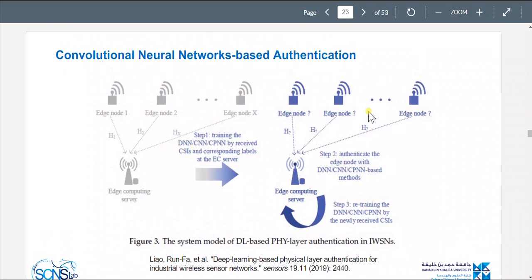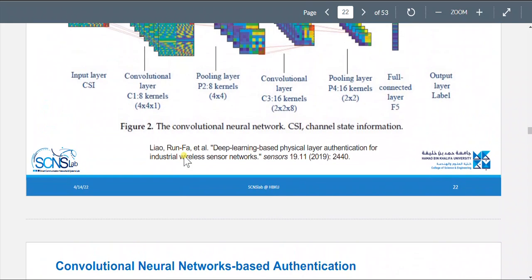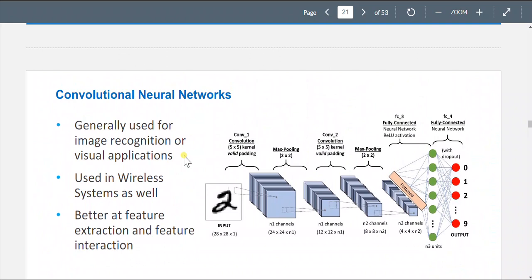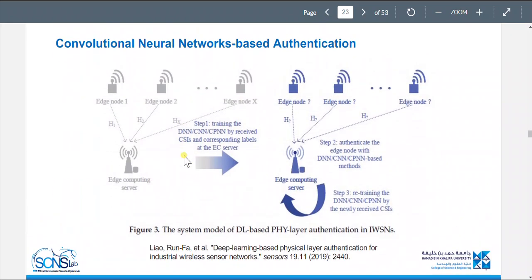Here for authentication, here we have edge nodes. Step one is training the network by received CSI and corresponding neighbors in the labels at the EC server, the edge computing server. Then we authenticate the edge node, then we retrain the deep neural network by the newly received CSI.